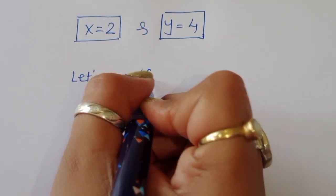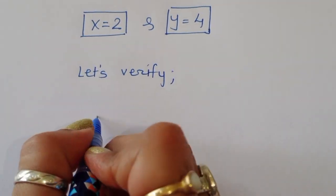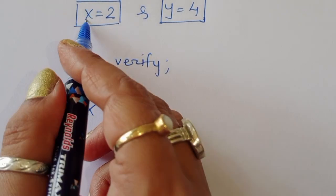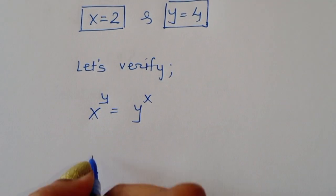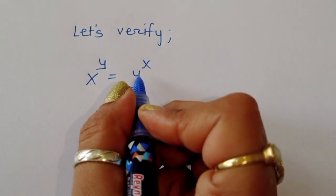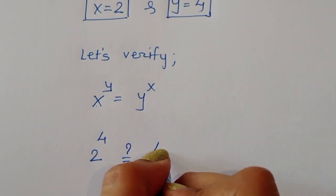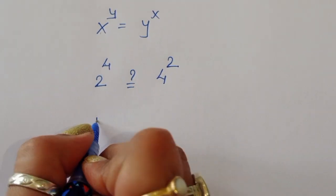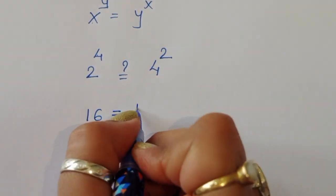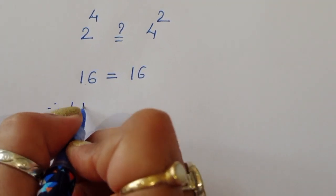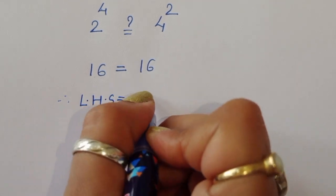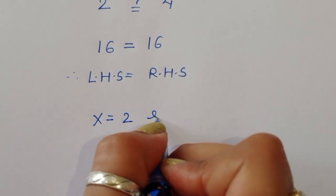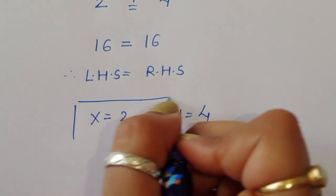Let's verify: the original equation is x^y = y^x, with x = 2 and y = 4. Left-hand side: 2^4 = 16. Right-hand side: 4^2 = 16. LHS equals RHS, so x = 2 and y = 4 is a correct solution. You can also find other solutions using different values of k.